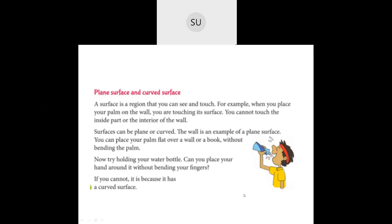Then we saw plain surfaces and curved surfaces. A surface is a region you can see and touch — only the outer layer is the surface. Surfaces can be plain or curved. If you can place your palm flat over a wall or a book without bending the palm, it is called a plain surface. If you have to bend your fingers around an object, it has a curved surface.